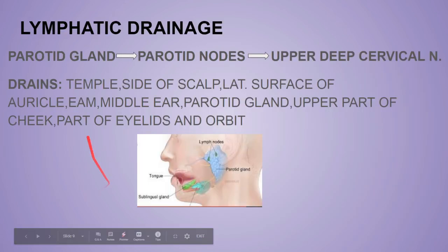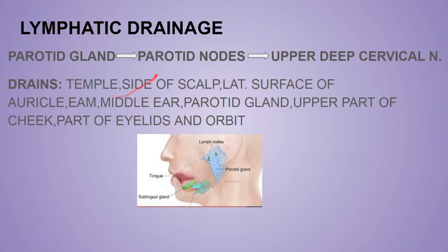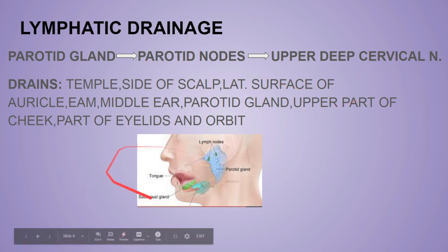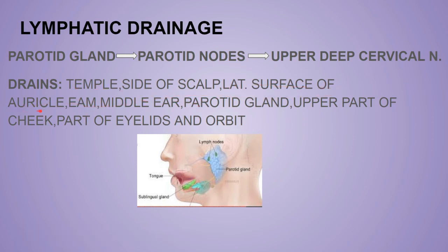The lymphatic drainage: the parotid gland drains first into the parotid nodes and then into the upper deep cervical nodes. These nodes mainly drain the temple side of the scalp, the lateral surface of the auricle, the external acoustic meatus, the middle ear, the parotid gland, the upper part of the cheek, and part of the eyelids and orbit.